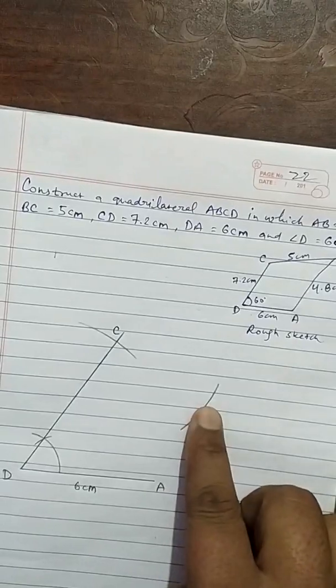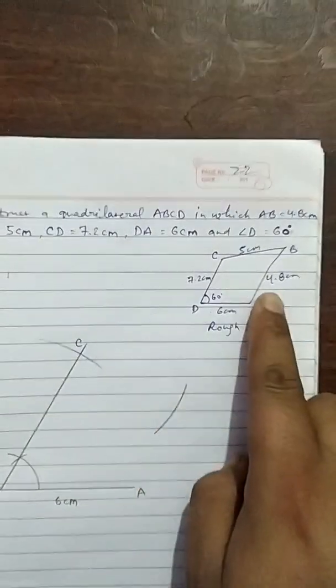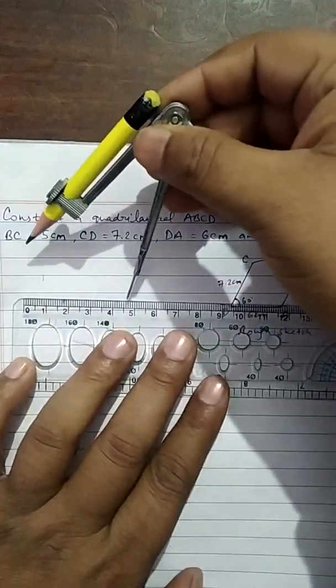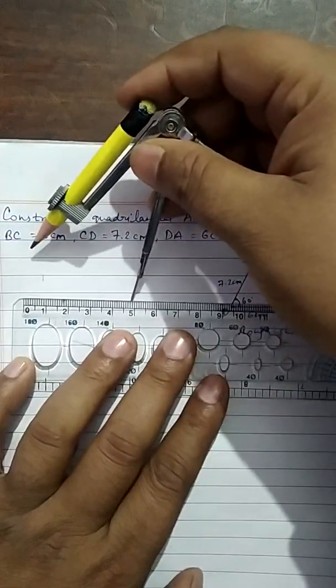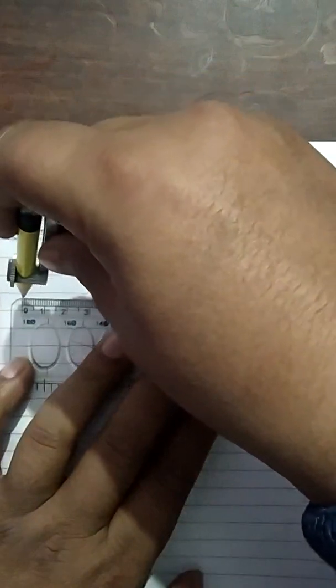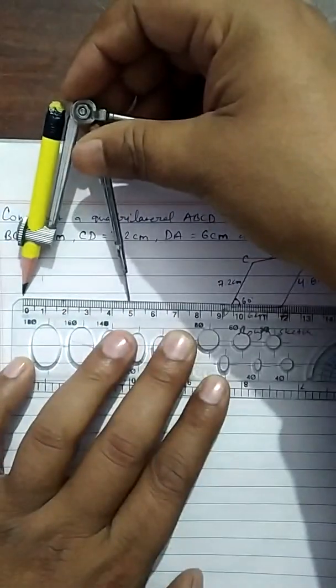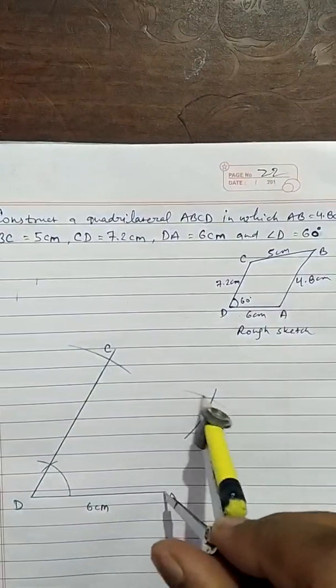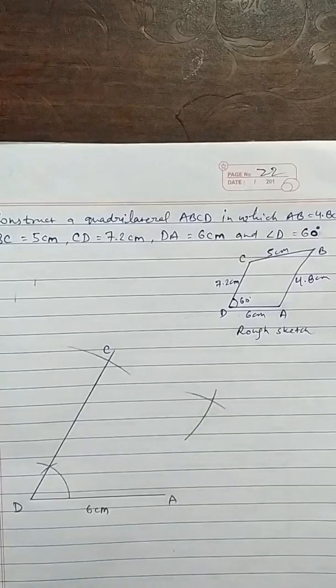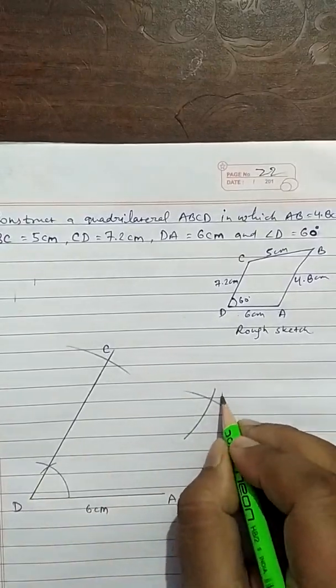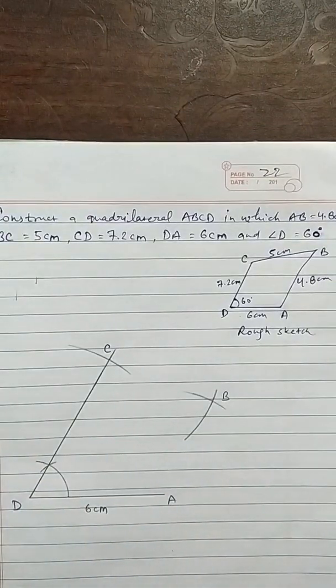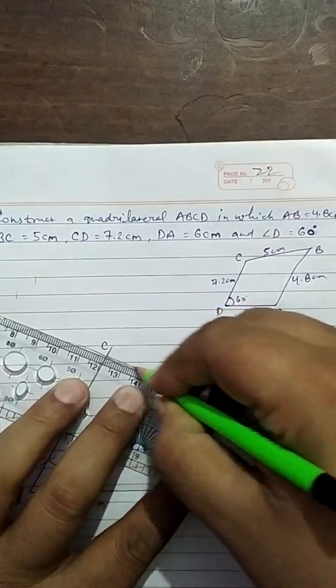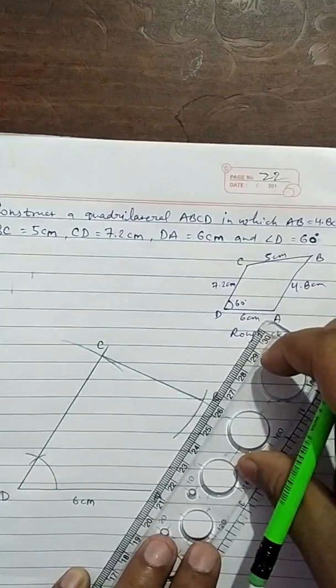Now, from A to B, AB is of 4.8cm. So, we will open it at 4.8cm. This is 4.8cm adjustment from 0. Now, with A as center, take this arc. This arc is of 4.8cm. Now, write here, point B. And now, join all the vertices using scale and pencil. This is C to B and this is AB.